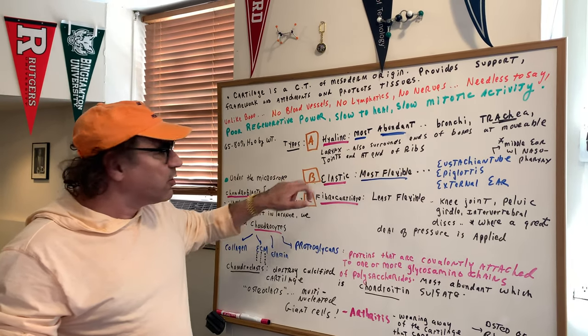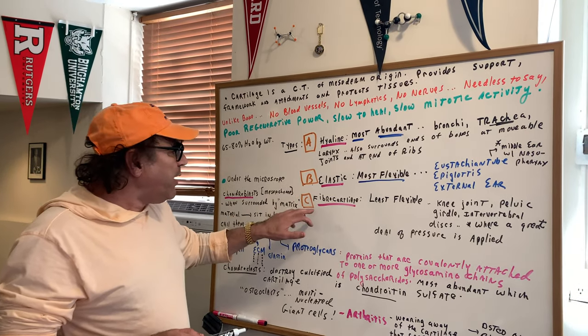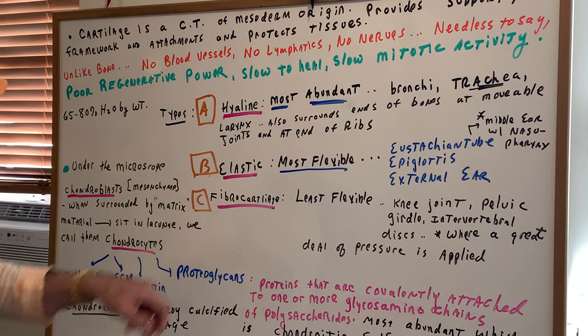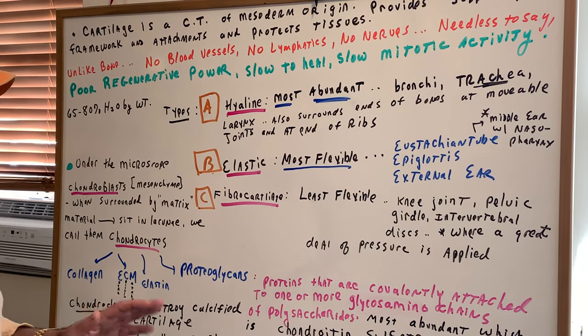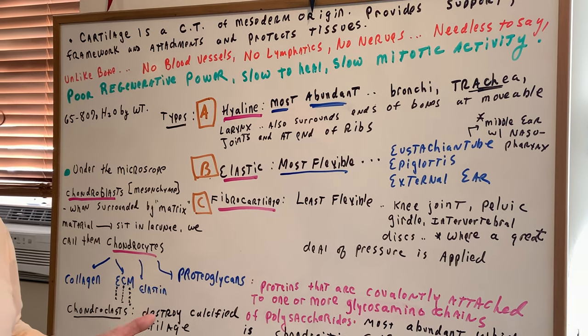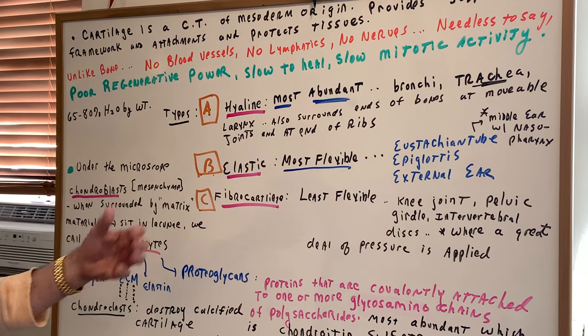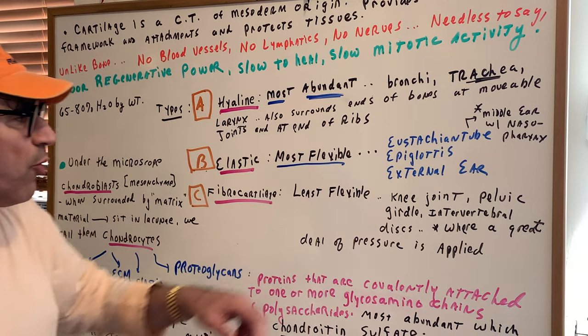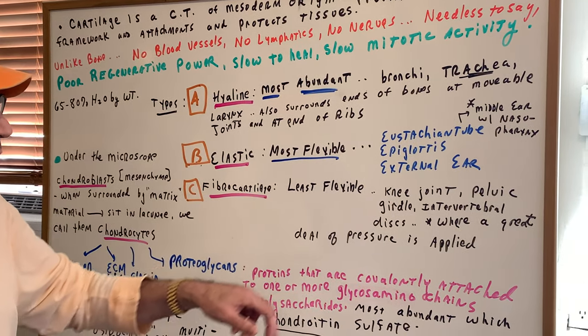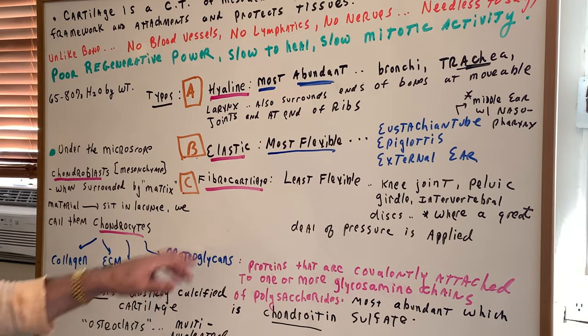Then we have the least flexible tissue of all, and that's fibrocartilage. And this is where, when there's a great deal of pressure being applied, and you need a lot of strength. For instance, the knee joint, pelvic girdle, the intervertebral discs. That's fibrocartilage.